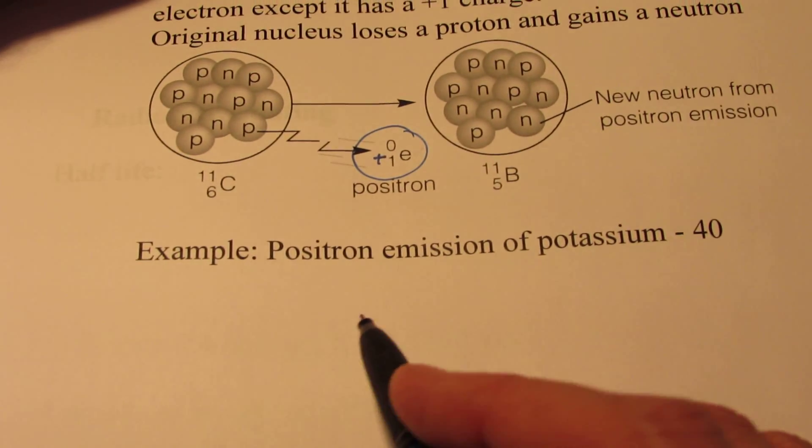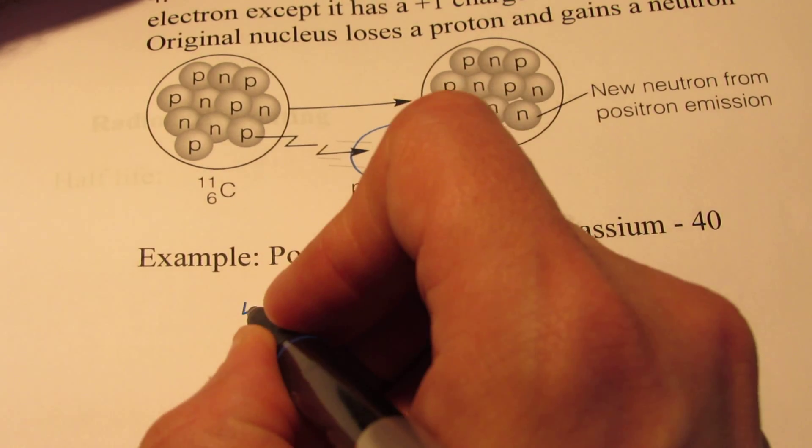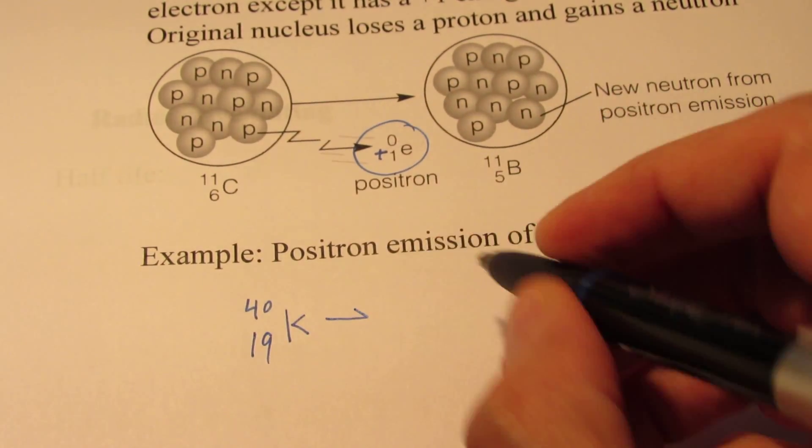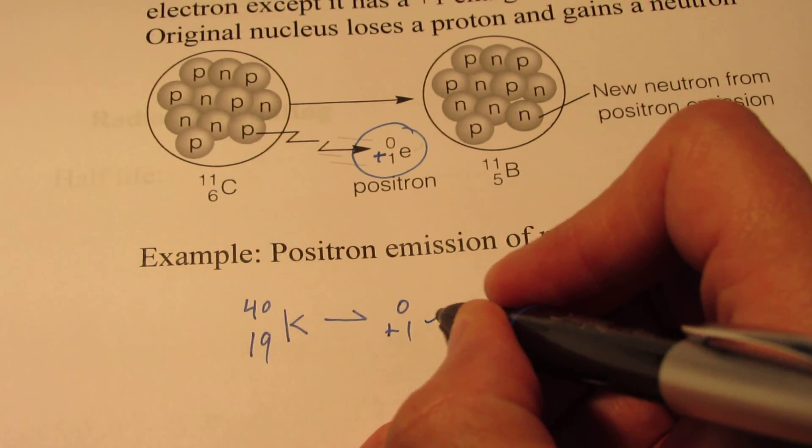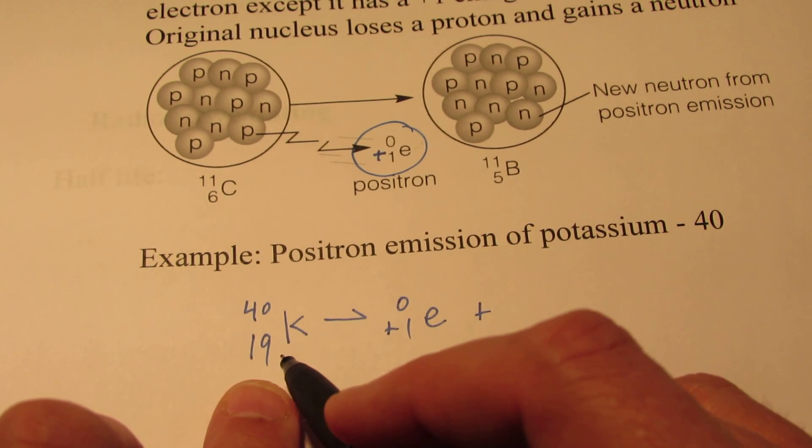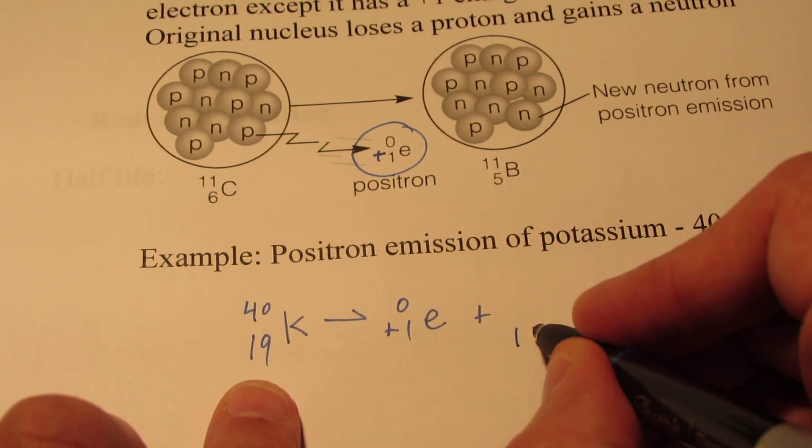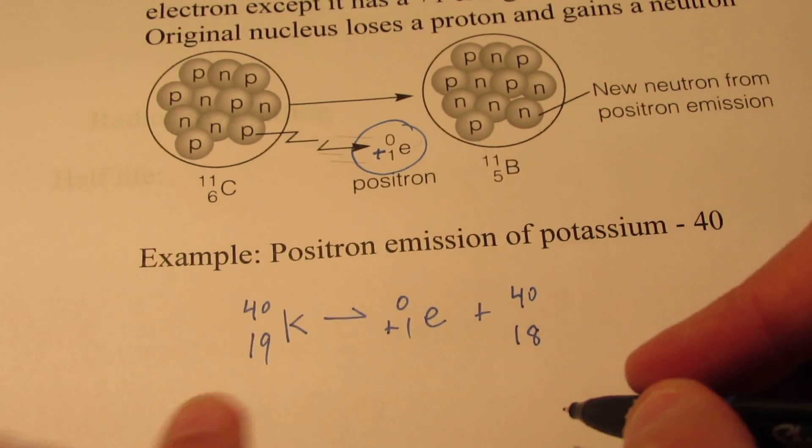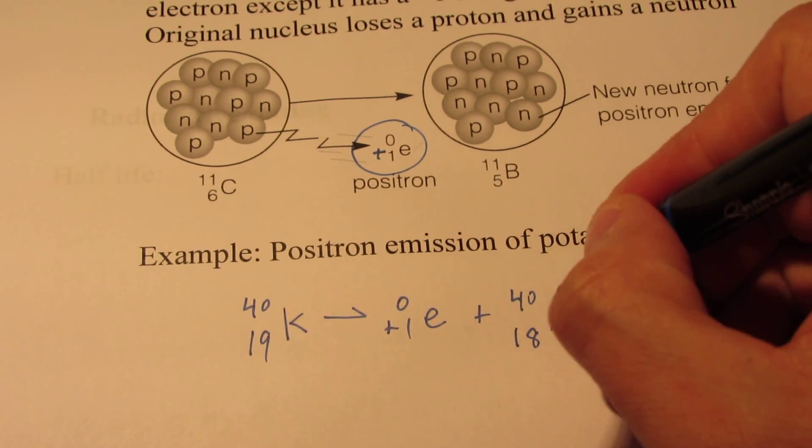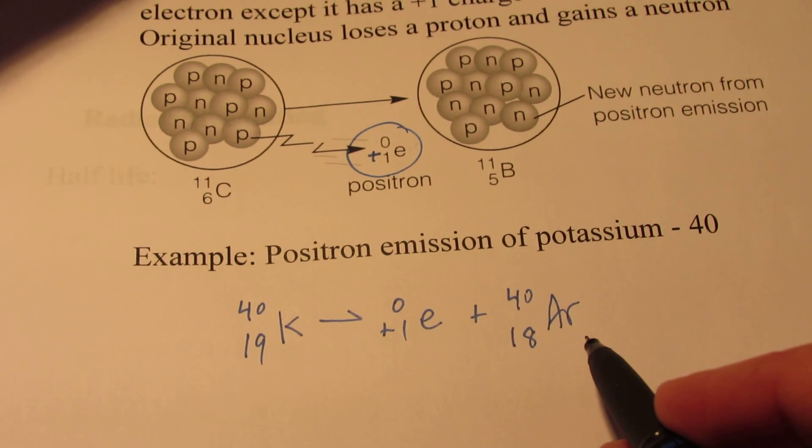Let's practice with the positron emission of potassium-40. So we have potassium with a mass number of 40 and the atomic number of potassium is 19. And we're going to kick out a positron, 0 over positive 1 e. And what do we end up with? Well, let's see. We have a proton that turns into a neutron, so the proton is going to go down to 18. The mass number will stay the same. The atomic number 18 is the element argon. So we transmutate a potassium atom into an argon atom.